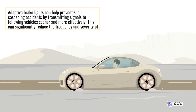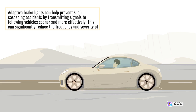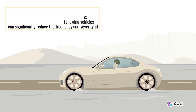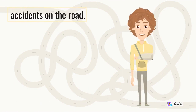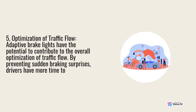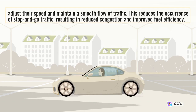Adaptive brake lights can help prevent cascading accidents by transmitting signals to following vehicles sooner and more effectively. This can significantly reduce the frequency and severity of accidents on the road. 5. Optimization of Traffic Flow: Adaptive brake lights have the potential to contribute to the overall optimization of traffic flow. By preventing sudden braking surprises, drivers have more time to adjust their speed and maintain a smooth flow of traffic. This reduces the occurrence of stop-and-go traffic, resulting in reduced congestion and improved fuel efficiency.